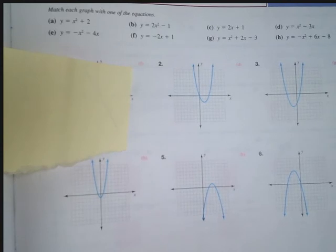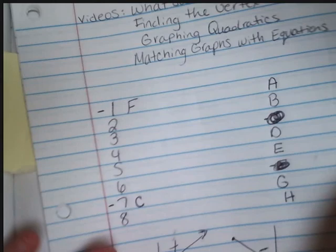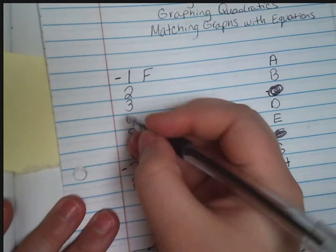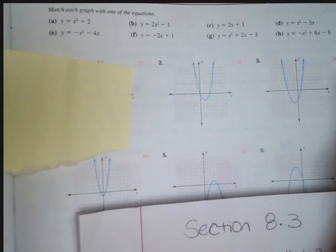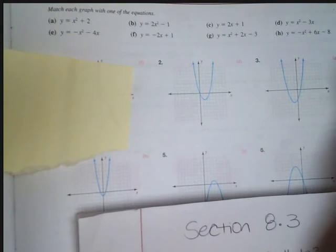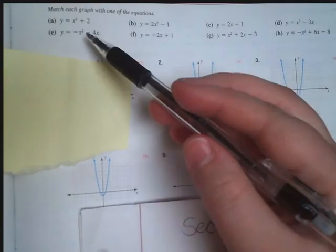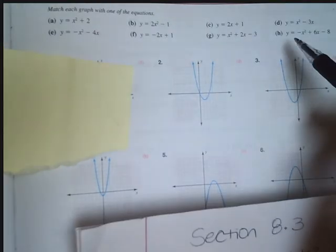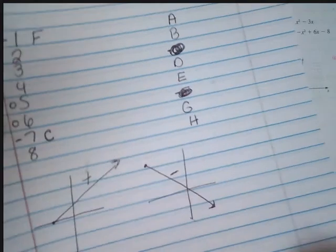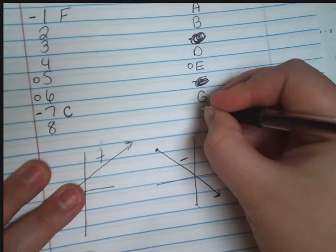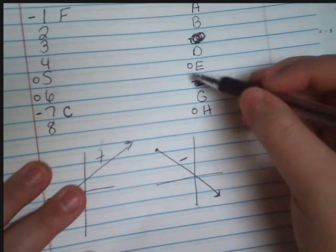When a graph faces downward we know that it is going to have a negative a. So we're looking at graphs five and six. I'm gonna draw like a little circle on those, five and six. Those are the ones we're looking at and let's look at which equations have a negative a. If you look you'll see that e and h are those two equations that have the negative a value. So we know that these two are going to match with these two. We just don't know which is which yet.